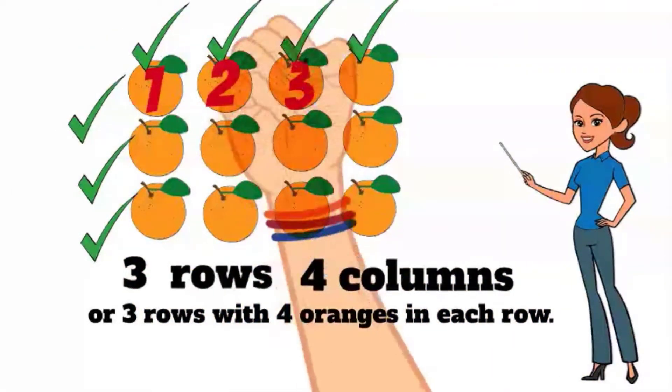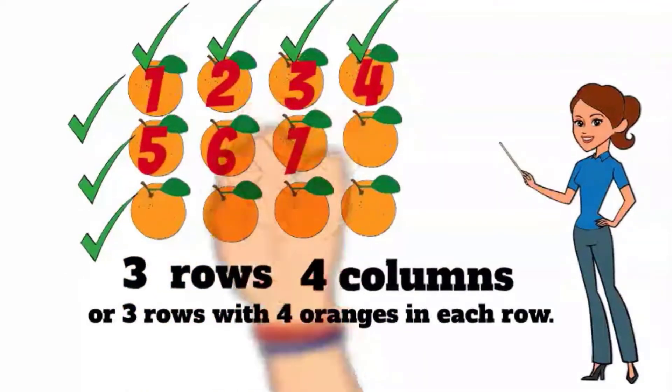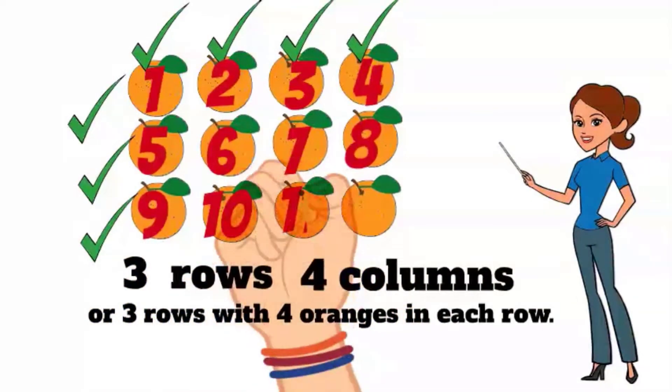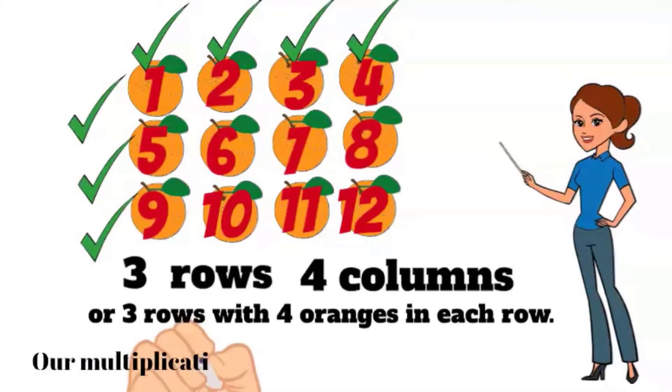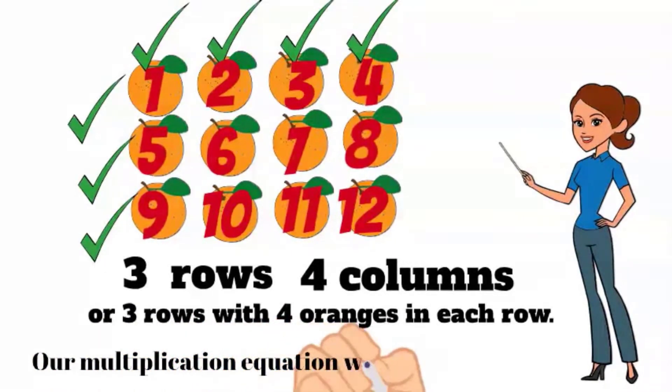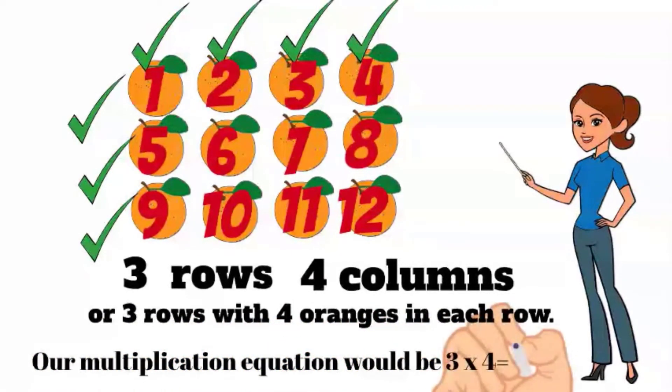If we count all the oranges one by one, we would end up with twelve. So our multiplication equation would be three times four equals twelve. Three rows times four columns equals twelve.